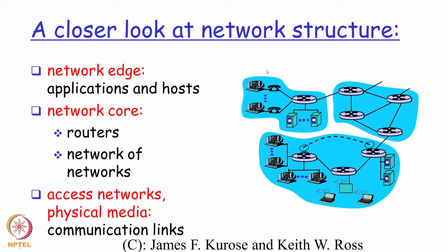The first part is called the network edge. The network edge is comprised of systems that are actually running my applications. The applications are going to run on my host systems. The host, or end systems, are the systems on which I will typically be running my network applications — be it a browser, web server, file server, email client, or email server.